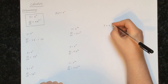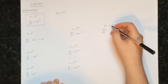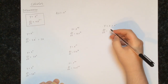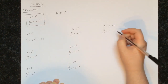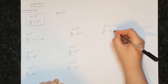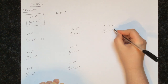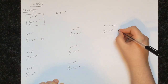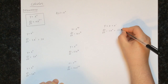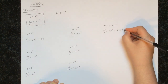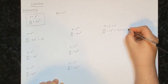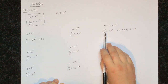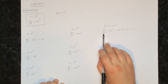Let's say y equals x. Well, that's the same as x to the power of 1. We multiply by the power, which is 1, and then reduce the power by 1: 1 minus 1 equals 0. That gives 1 multiplied by x to the power of 0. Any number to the power of 0 equals 1, so we're left with 1 times 1, which is just 1. So if y equals x, then dy/dx equals 1.